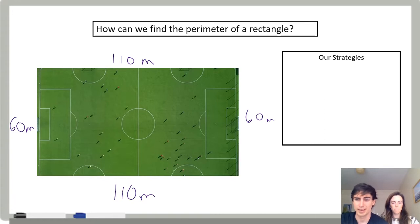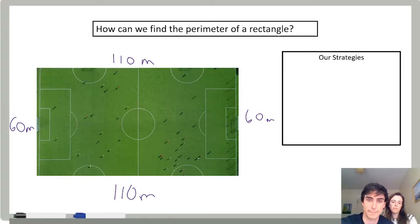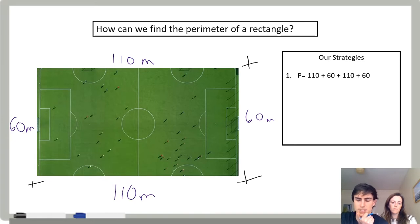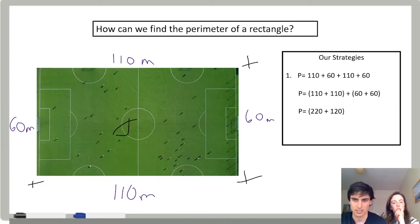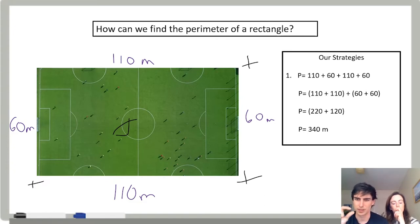I bet that I can find the perimeter by just adding up all the sides. If I add up each side, I'll know how far I go around the outside of the shape. So I'm going to add up 110 plus 60 plus 110 plus 60. For my brain, it's a little easier to do 110 plus 110, then 60 plus 60. So 110 plus 110 is 220, and 60 plus 60 is 120. Then I can add the 20 plus 20 to get 40, and 100 plus 200 to get 340. I think the perimeter is 340 meters.